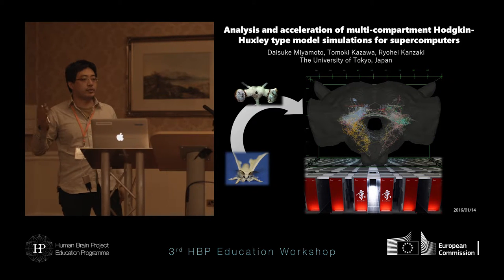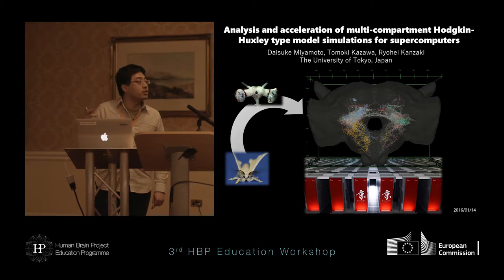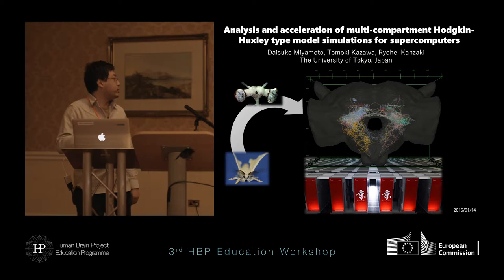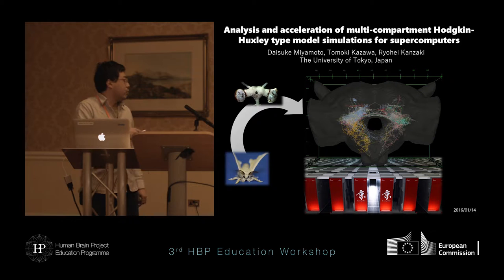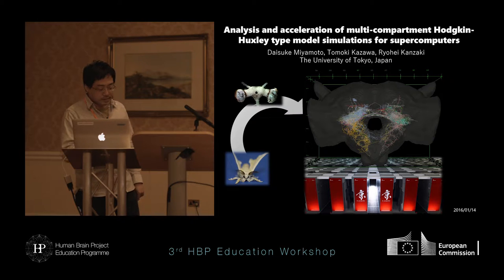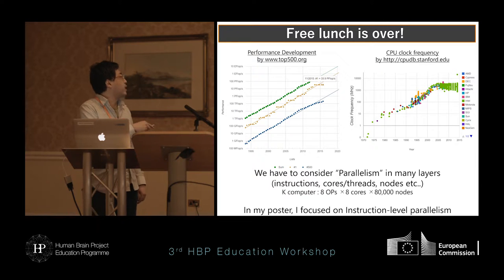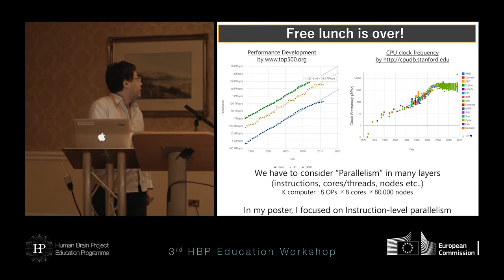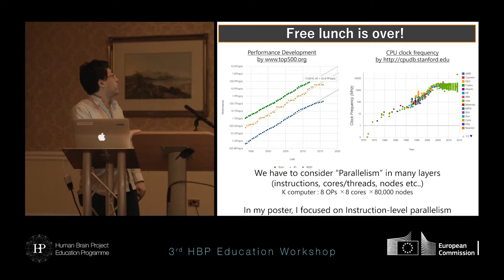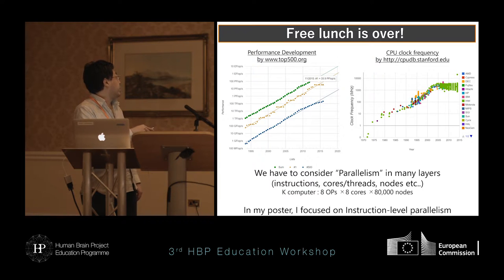That kind of simulation needs a large amount of calculation cost, so we started to use K-computer. It is the first computer in Japan and first place in the world. This left figure shows the exponential development of supercomputer performance, and it says in 2020 it will reach 1 exaflops at the top.